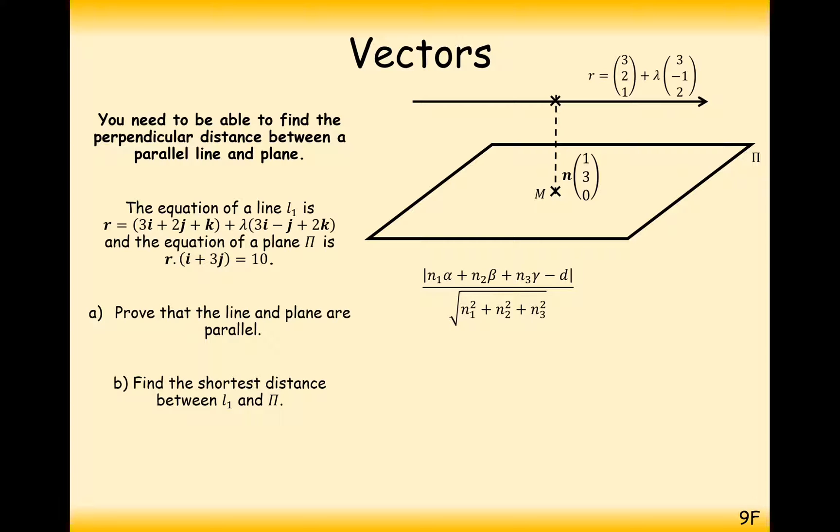So we're going to apply this formula here. Substituting your values, remember alpha is 3, beta is 2, gamma is 1 and this is the value n1, n2 and n3 down here. The d value is this thing at the end of the equation here. So it's going to be 1 times 3 add 2 times 3 add 1 times 0 minus 10, all over the square root of 1 squared plus 3 squared plus 0 squared, and calculate that value and we get 1 over root 10.